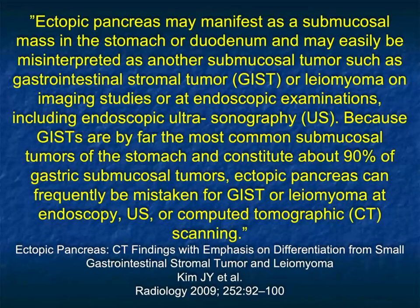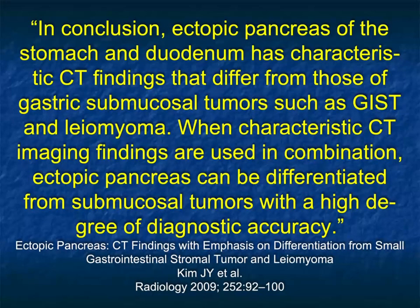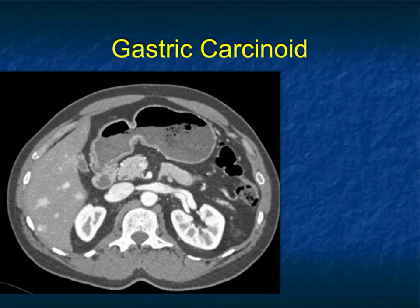In this article by Kim, ectopic pancreas may manifest as a submucosal mass in the stomach or duodenum and be misinterpreted as another submucosal tumor such as GIST or leiomyoma. It can be mistaken not only on CT but on ultrasound, MR, and even on direct visualization with endoscopy. So it's something to consider in the differential diagnosis. In the old days on fluoroscopy it would look like a flat polypoid lesion — you'd worry about malignancy or a benign tumor, but it's a very nice diagnosis.